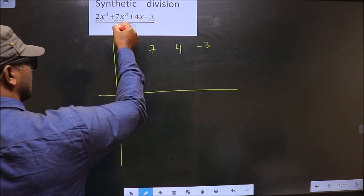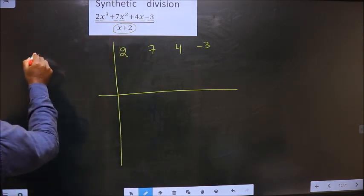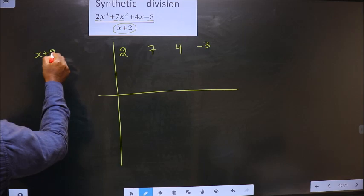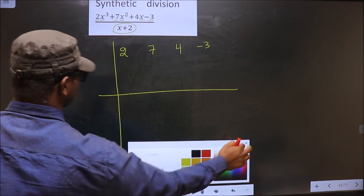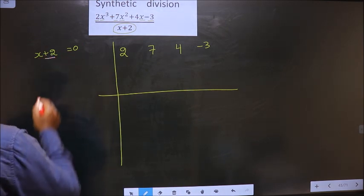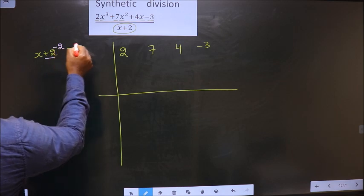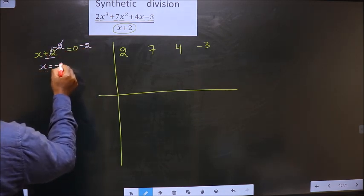Now we should equate the denominator to 0 and get x value from it. So x plus 2 equal to 0. So now to get x value from here, we should remove plus 2. So remove plus 2, you subtract 2. So now this cancel out, you get x equal to minus 2.